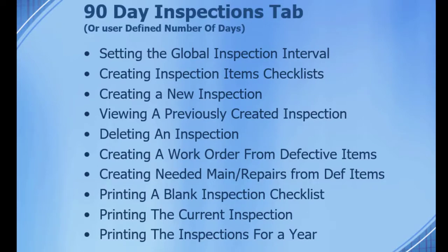Hi, Mark Reed here. In this video, I'm going to go over the 90-day inspections tab, or user-defined number of days. We're going to cover setting up the global inspection interval, creating the inspection items checklist or modifying the list, creating a new inspection, viewing a previously created inspection, deleting an inspection, creating a work order from defective items, creating needed maintenance and repairs from defective items, printing a blank inspection checklist, printing the current inspection, and printing the inspections for a year. All right, let's go ahead and get started.